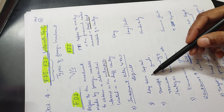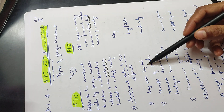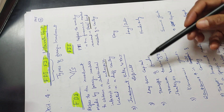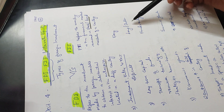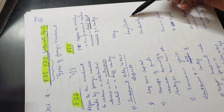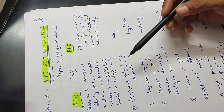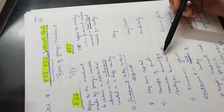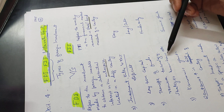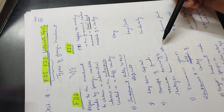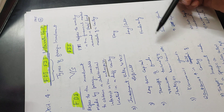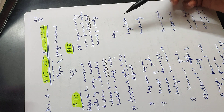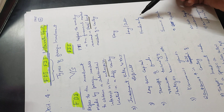FDI is long-term capital use, while FII involves both long-term and short-term capital. FII is easy to sell and increase in the market. FDI involves the transfer of funds, resources, technology, strategies, and know-how, whereas FII involves only funds.